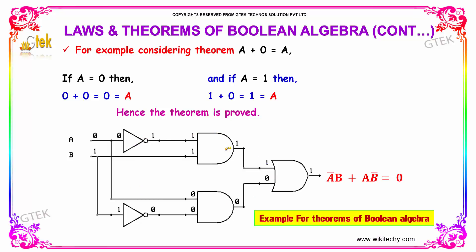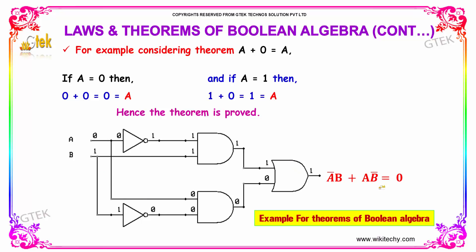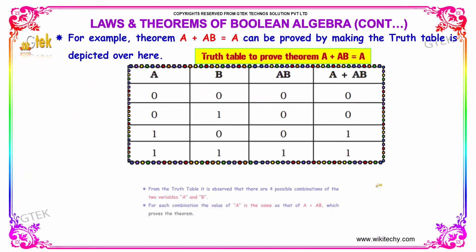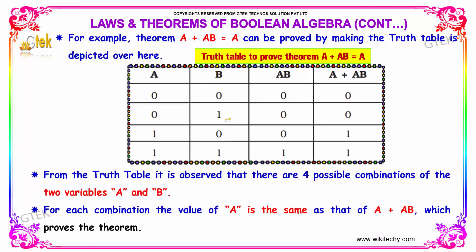Another typical example: a complement dot b plus a dot b complement is equal to 0. Also, the theorem a plus a dot b is equal to a can be proved by making a truth table.